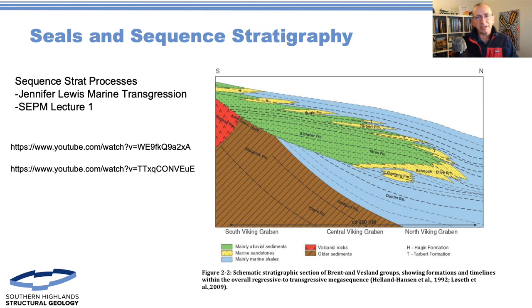We've got a set of sands at the bottom which is the Rannoch. As sea level changes we start to get the delta prograding. Out front we have shoreface sands - the Tarbert and Ness sands are shoreface sands. They get called the same name, they all sit in the same depositional environment, but they are not time-equivalent.